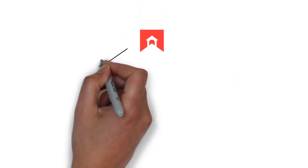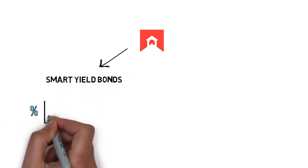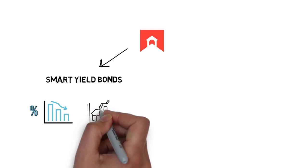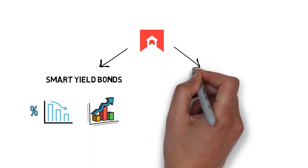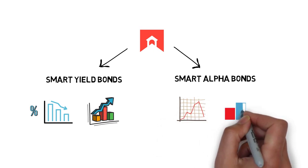BarnBridge at the moment offers two products: smart yield bonds, interest rate volatility risk mitigation using debt-based derivatives, and smart alpha bonds, market price exposure risk mitigation using tranche volatility derivatives.